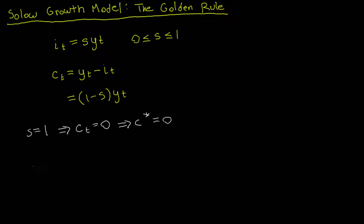Now let's consider the case where we don't save at all, where S equals zero. Looking at the consumption equation, you might think we're not saving so we must only be consuming. However, what happens to GDP per capita if we don't save at all — specifically in a steady state? Because remember, the golden rule refers to something in the steady state. If S equals zero, let's figure out what happens to capital per capita in a steady state, and from there we can figure out what happens to GDP per capita.